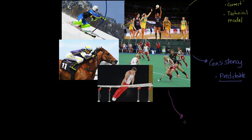Very much linked to that is the notion that they are accurate. Whether it's foot placement — we see here with our hockey player — or whether it is the positioning of the skis around the pole, these performers are accurate. They place things precisely. It doesn't have to be a hand or a foot; it could be their centre of mass, for example. It's an accurate performance.